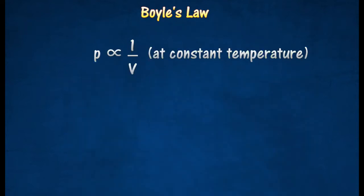P is the pressure, and V is the volume of a fixed mass of gas at constant temperature.